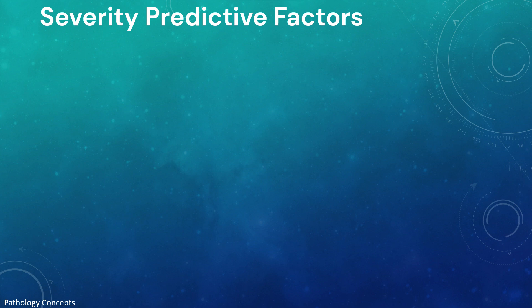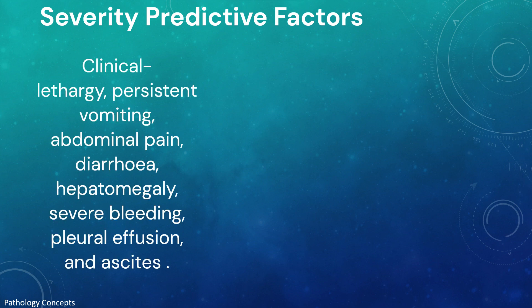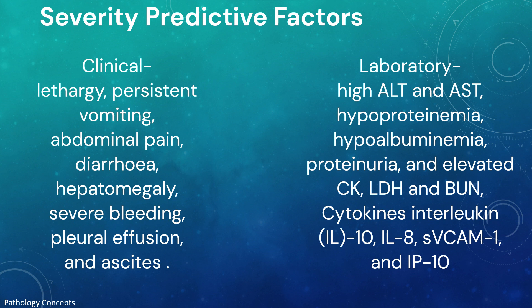Predictive factors for severe dengue include lethargy, persistent vomiting, abdominal pain, diarrhea, hepatomegaly, severe bleeding, pleural effusion, and ascites. Significantly high ALT and AST, hypoproteinemia, hypoalbuminemia, proteinuria, and elevated creatine kinase, lactate dehydrogenase, and blood urea nitrogen are positively associated with severe dengue. Cytokines interleukin-10, IL-8, sVCAM-1, and IP-10 have also been shown to be positively associated with severity.